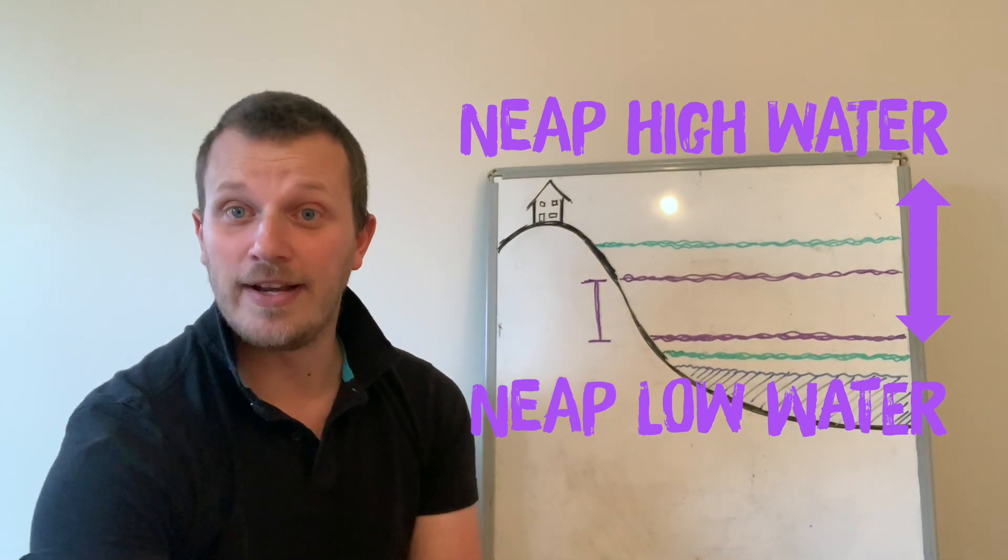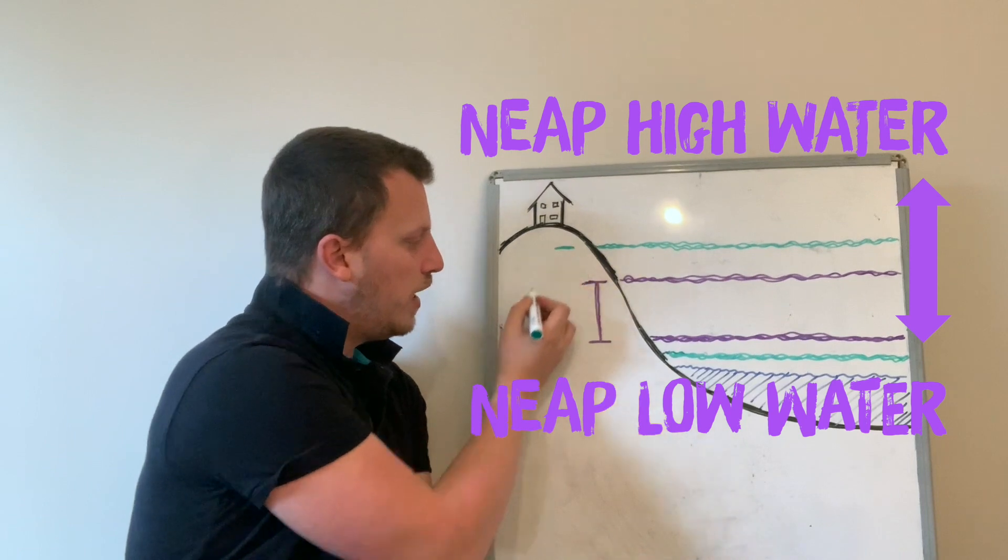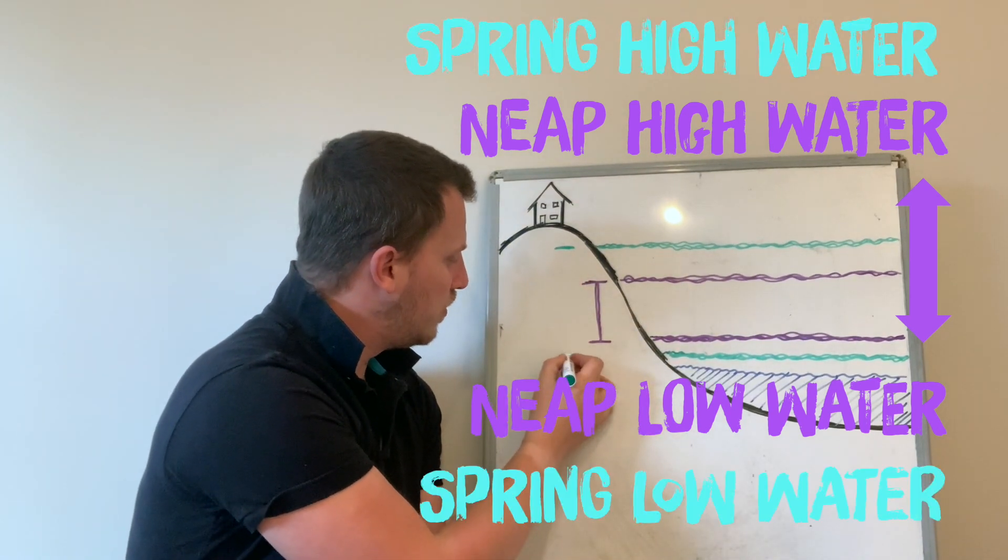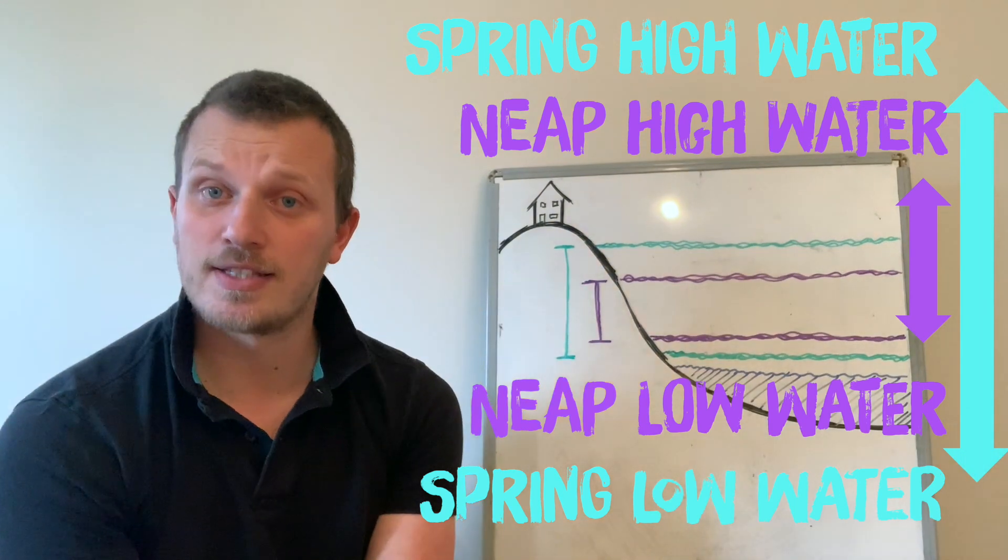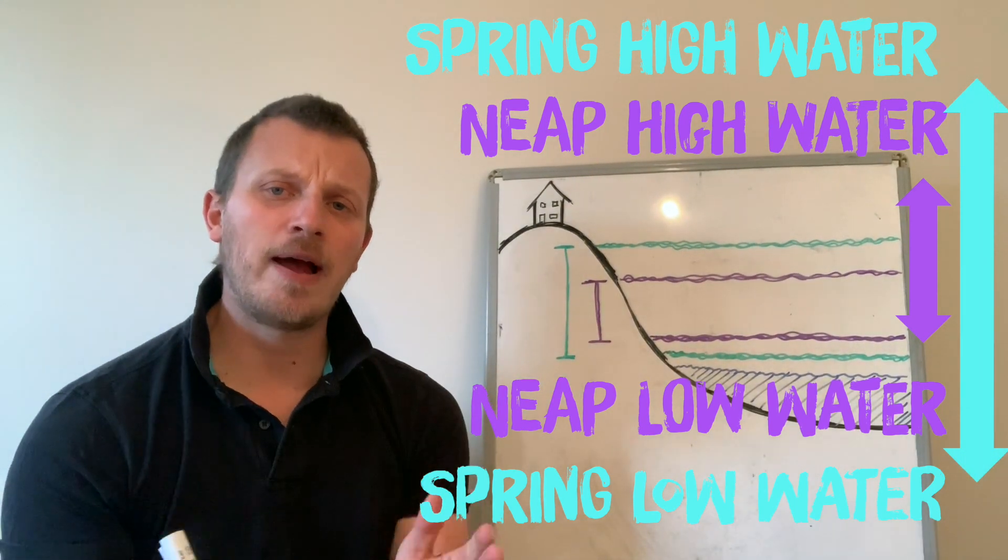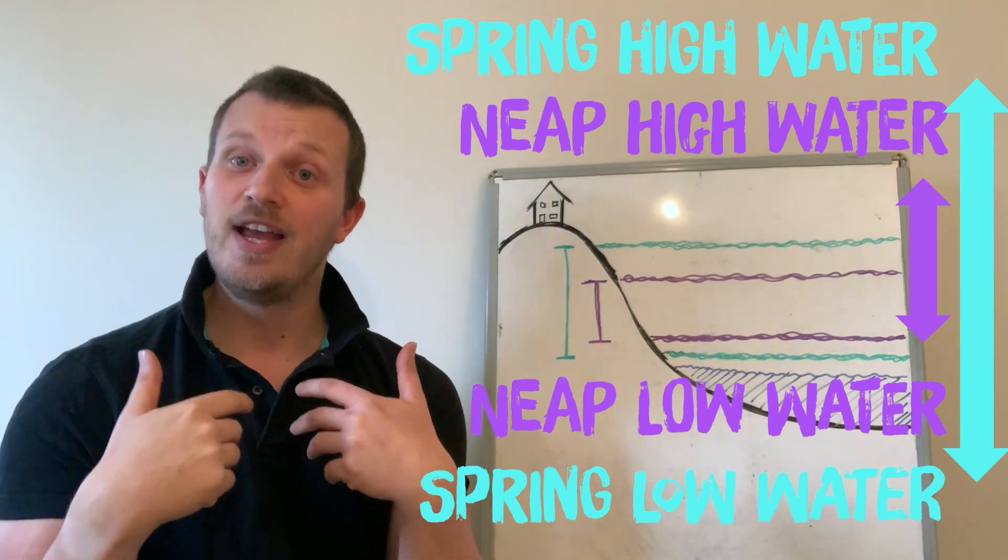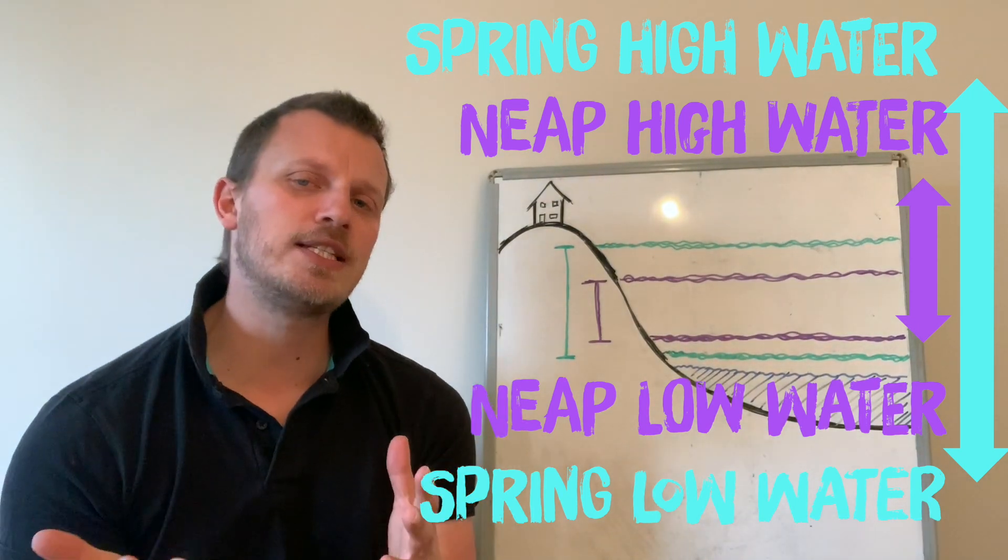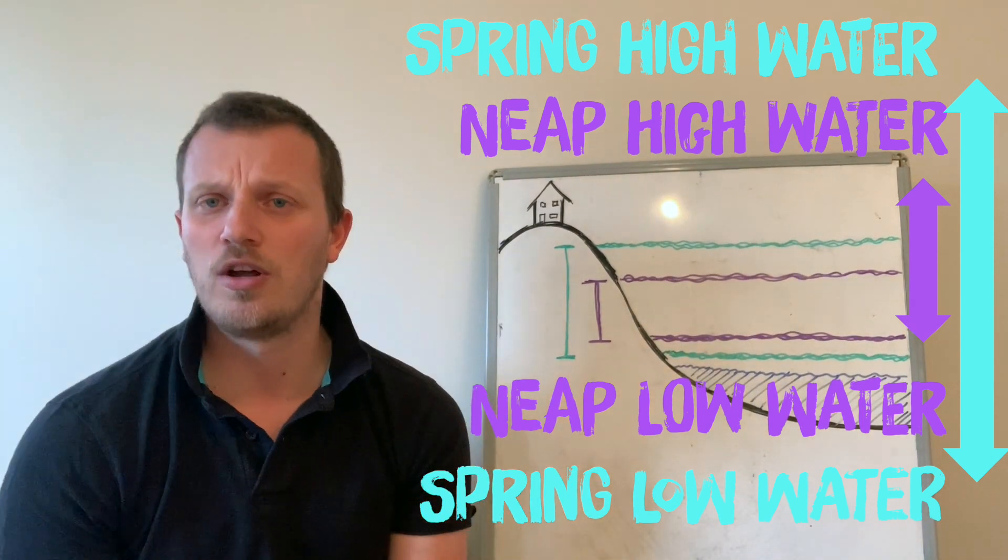For a spring, obviously it's quite different. A spring high water and a spring low water. What that means for us is, it's the same amount of time that our water is moving in. It's still that 24 hours, it's still six hours for it to come from low water to high water or high water to low water on average.